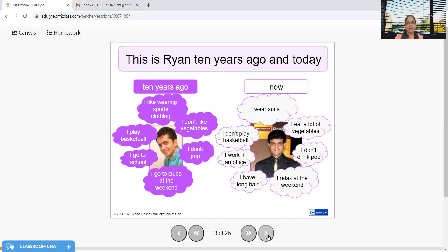Let's see what Ryan is doing now. He wears suits, he does not play basketball, he works in an office, he has long hair, he does not drink cola, and he eats a lot of vegetables. This is the difference in his life 10 years from now.